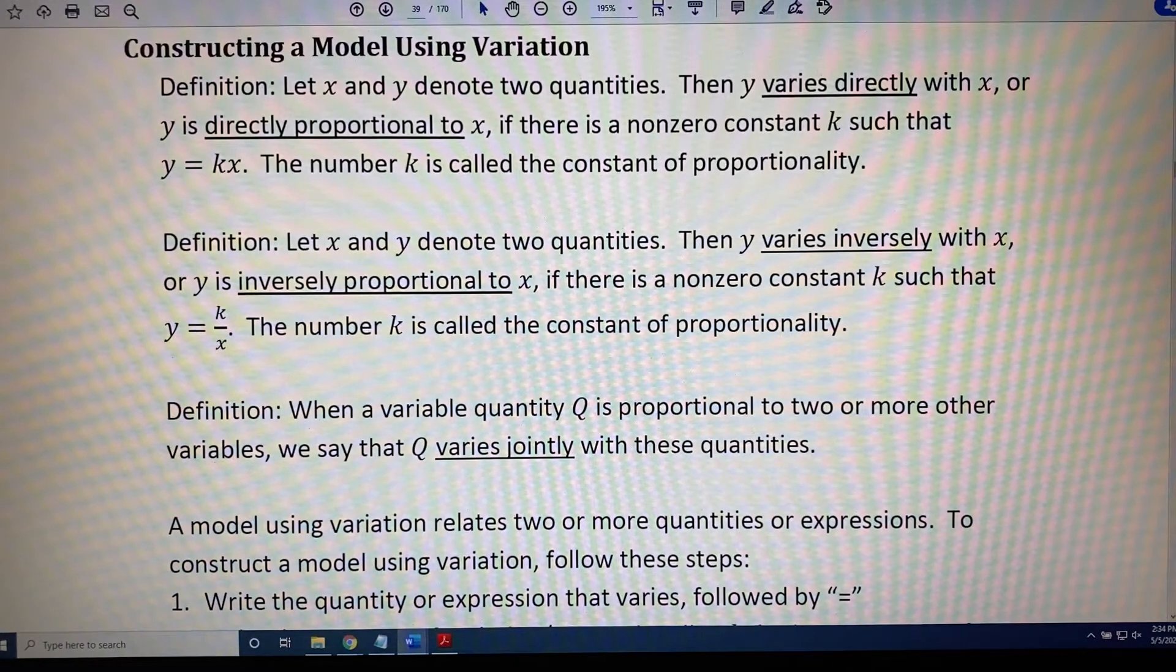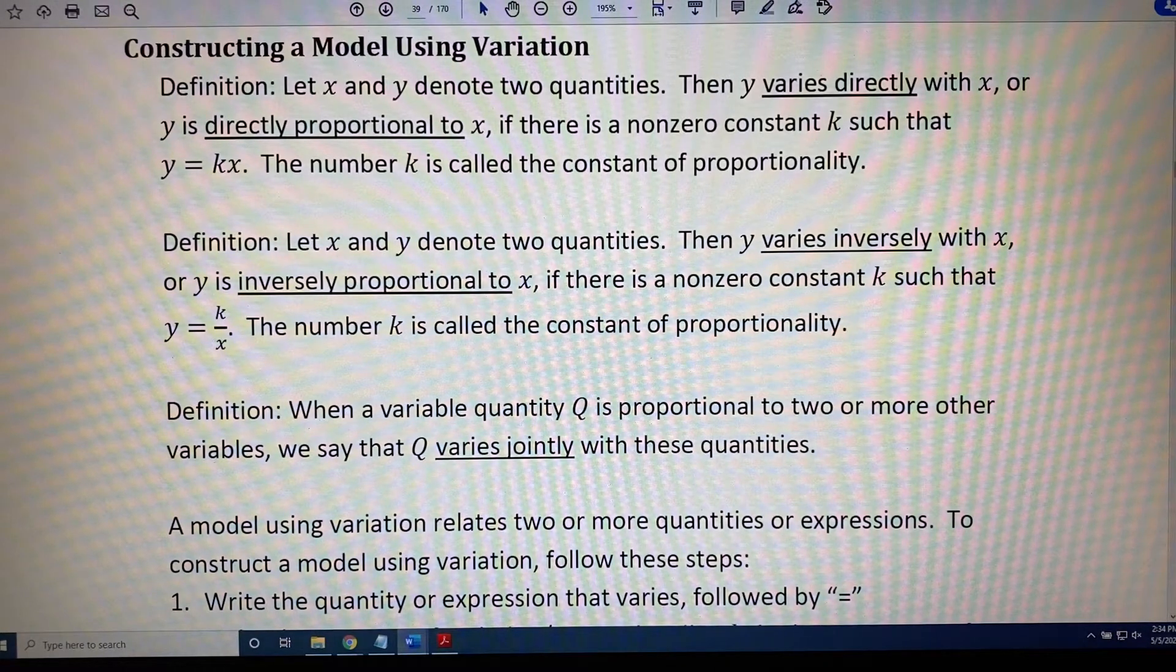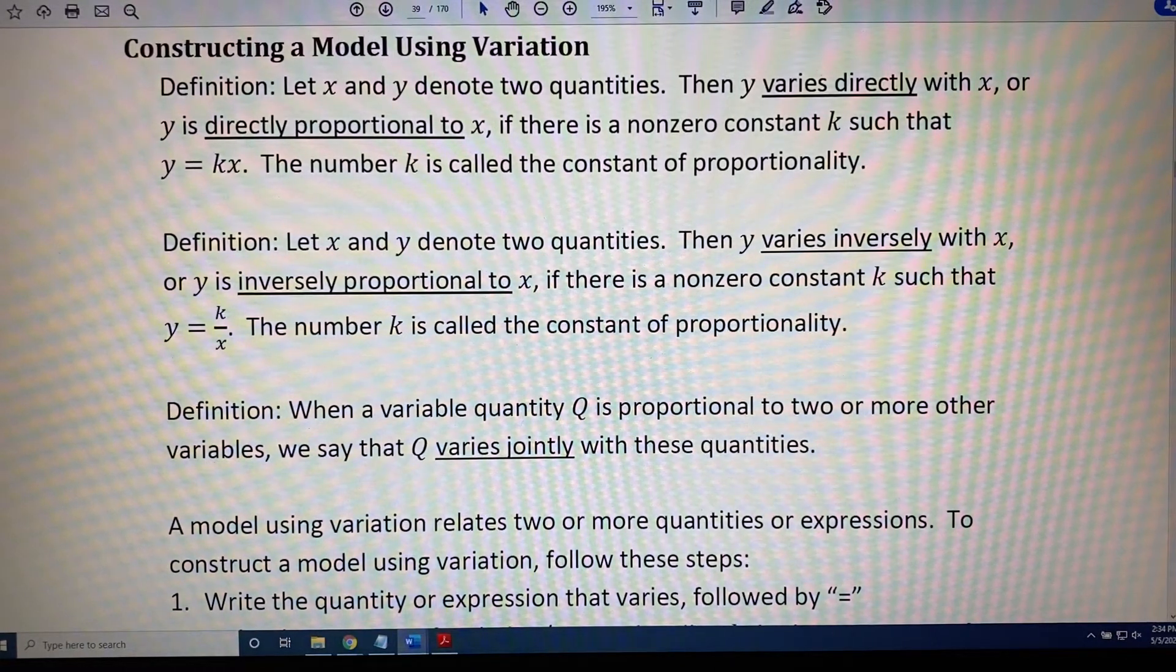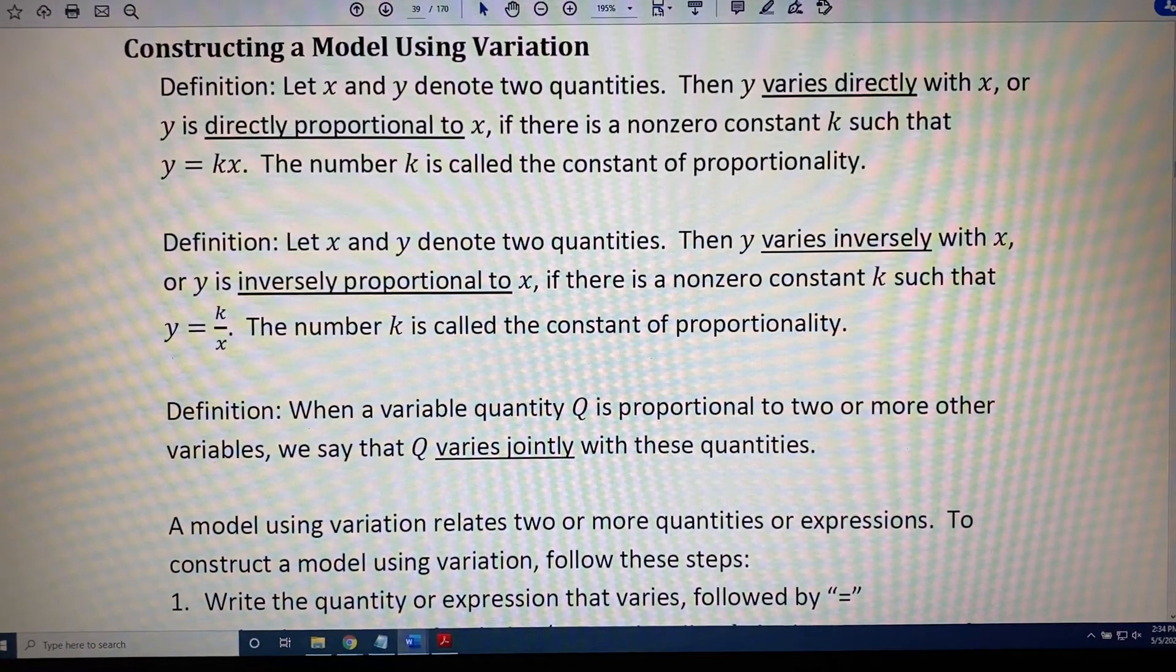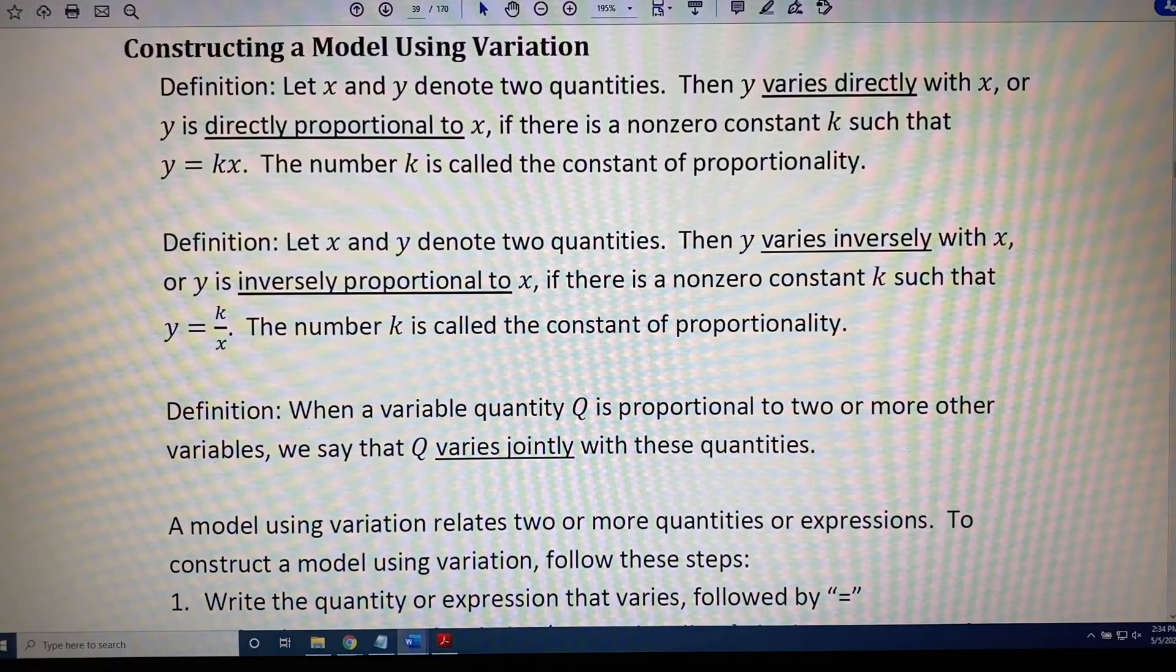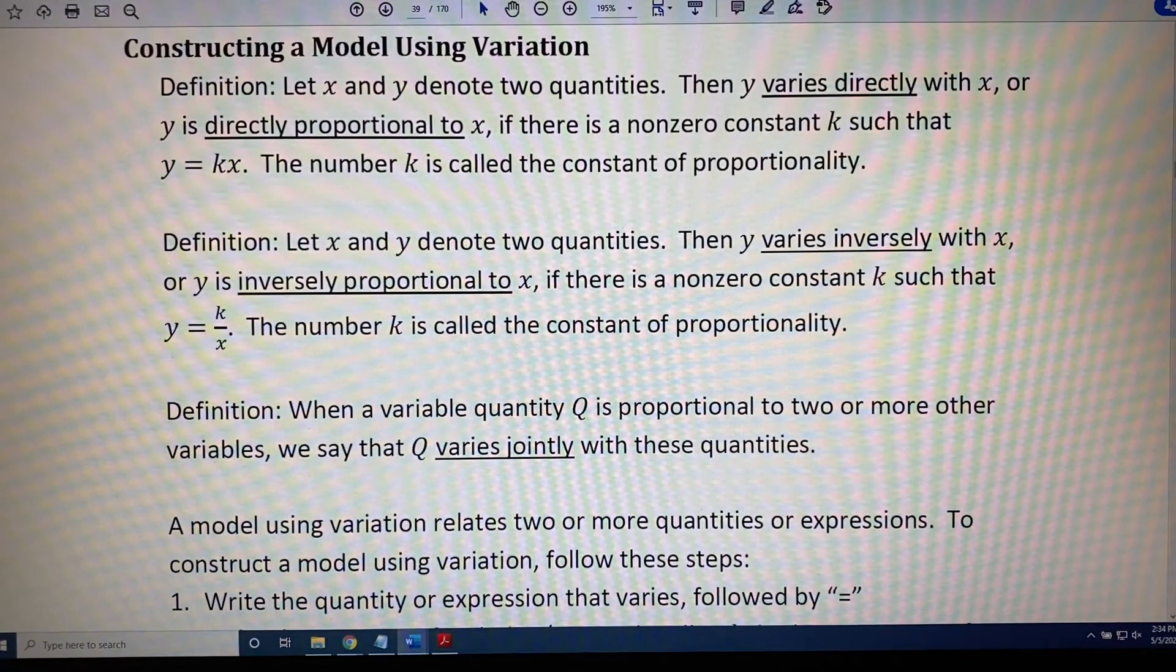Next definition. Let x and y denote two quantities. Then y varies inversely with x, or said another way, y is inversely proportional to x, if there is a non-zero constant k such that y equals k divided by x. The number k is still called the constant of proportionality.